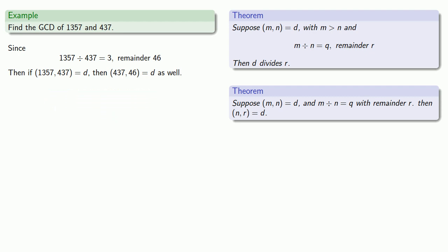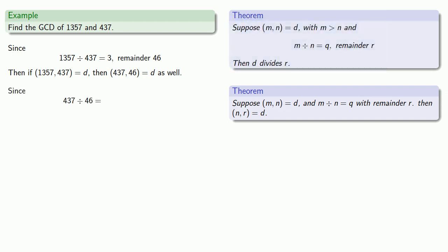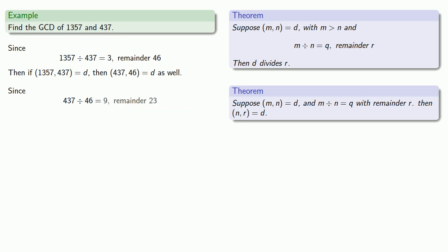How do you find the greatest common divisor of 437 and 46? To find this greatest common divisor, we'll divide the larger number by the smaller. 437 divided by 46 is 9 with remainder 23. And again, if the greatest common divisor of 437 and 46 is D, then the greatest common divisor of 46 and the remainder, 23, is D as well.